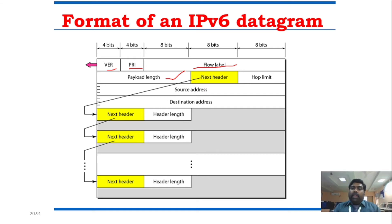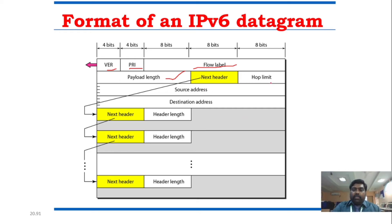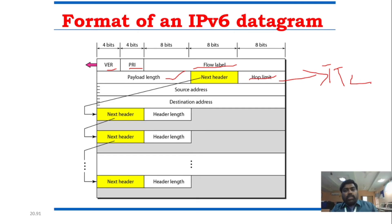The next header field is not the base header itself — the next header points to an extension header or another protocol header. The hop limit field is essentially the same as TTL in IPv4, just renamed hop limit. Then there is the source address and destination address, each of which is 128 bits long.